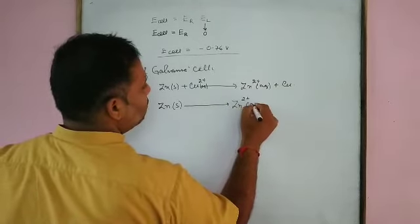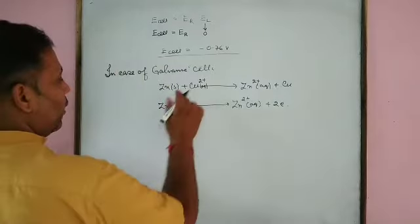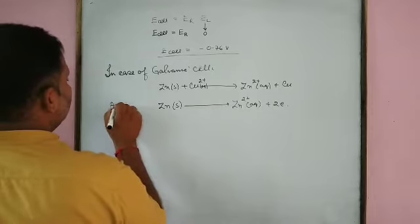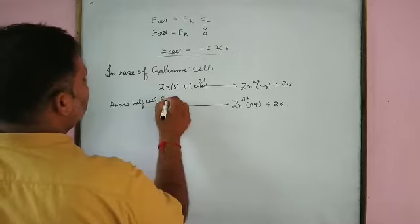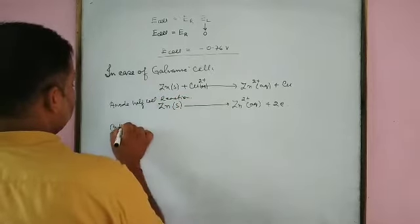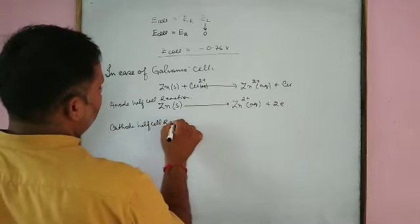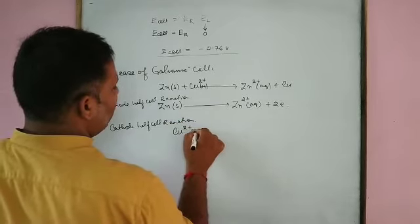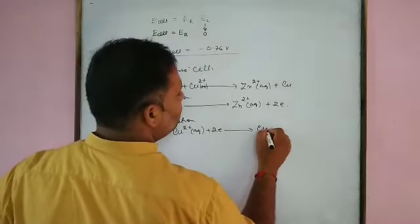Zinc is converted to Zn²⁺, releasing 2 electrons — this is the anode half cell reaction (oxidation). The cathode half cell reaction is Cu²⁺(aq) + 2e⁻ → Cu(s) (reduction). So in the galvanic cell, zinc undergoes oxidation at the anode and copper undergoes reduction at the cathode.